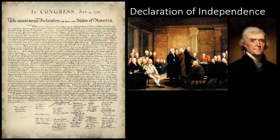The Declaration of Independence was the first formal statement by a nation's people asserting their right to choose their own government. When armed conflict between bands of American colonists and British soldiers began in April of 1775, the Americans were fighting only for their rights as subjects of the British Crown. By the following summer, with the Revolutionary War in full swing, the movement for independence had grown, and the delegates of the Continental Congress were faced with a vote on the issue.